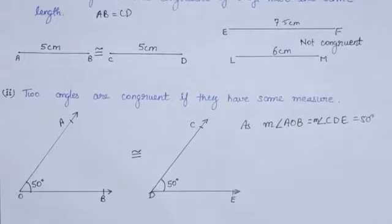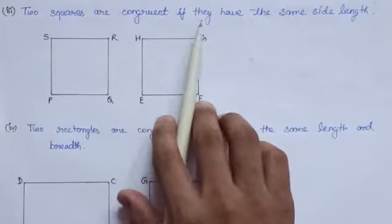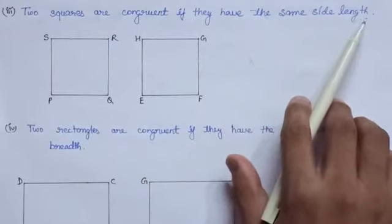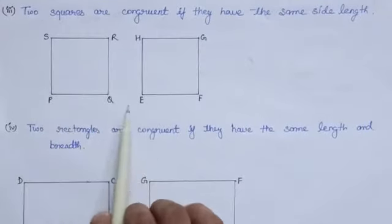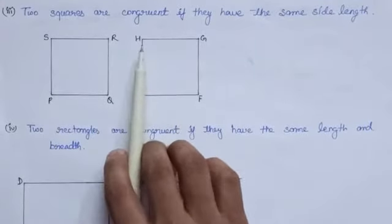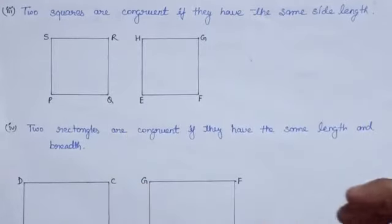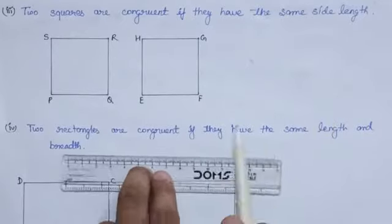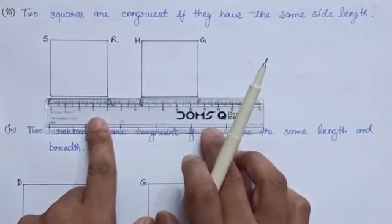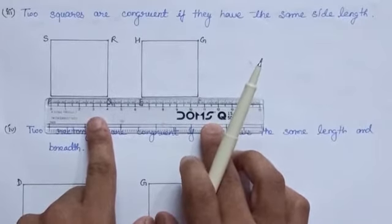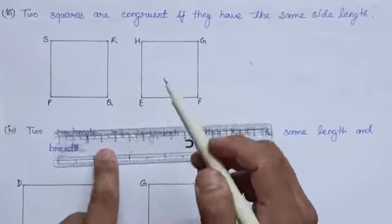Two angles are congruent if they have the same measure. Similarly, two squares are congruent if they have the same side length. Here we have two squares PQRS and EFJH. Let us see whether these two squares are congruent or not. First we will measure the side length of these squares. Here you can see that the measure of side PQ of square PQRS measures 4 cm.